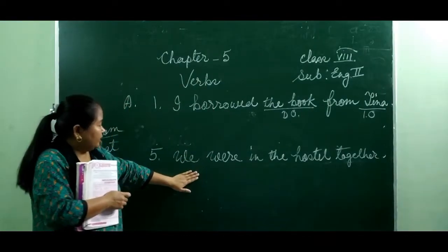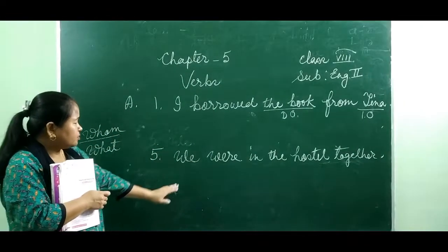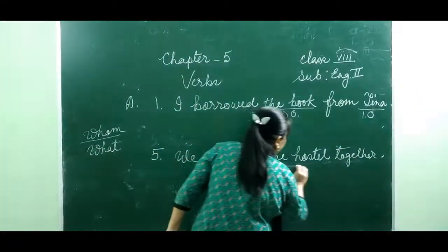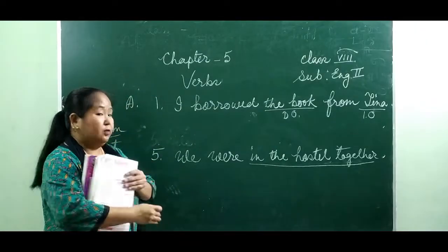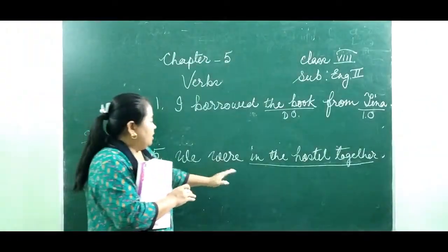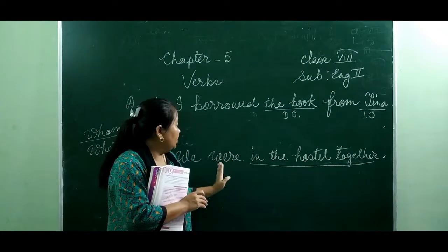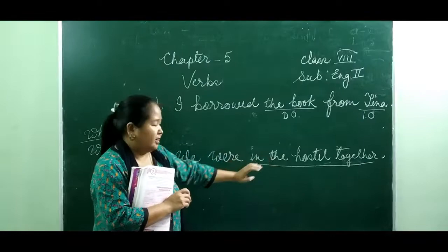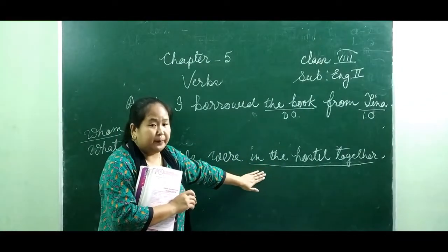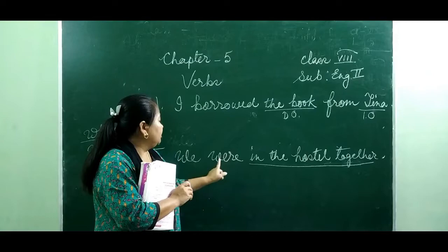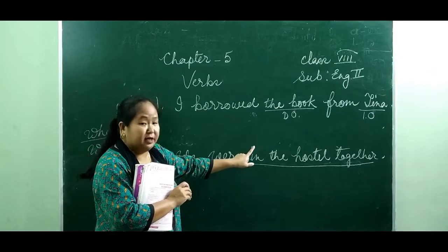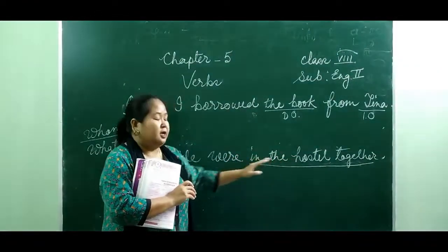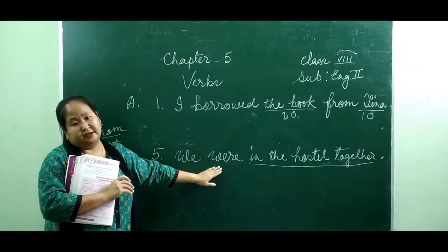Another example: 'We were in the hostel together.' In this sentence, you cannot ask 'what' or 'whom' and get an answer. You can only ask 'where' — 'Where were we? We were in the hostel.' So this verb is not answering 'what' or 'whom,' meaning it is not taking any object. It takes some other words — a group of words. So this verb is called an intransitive verb.